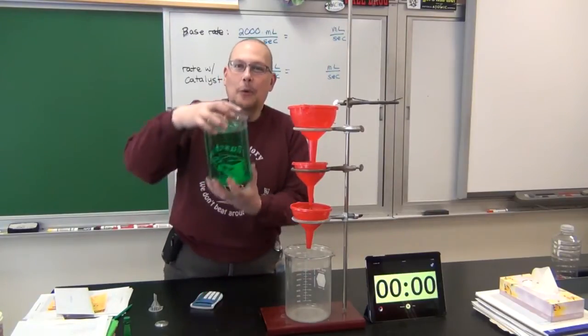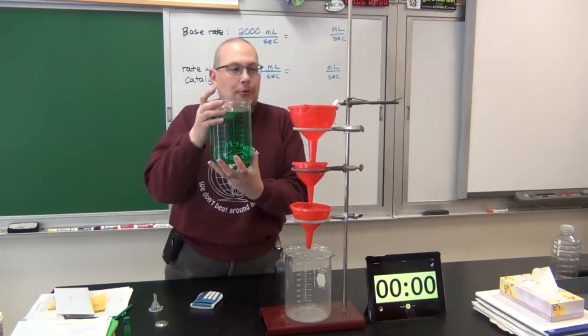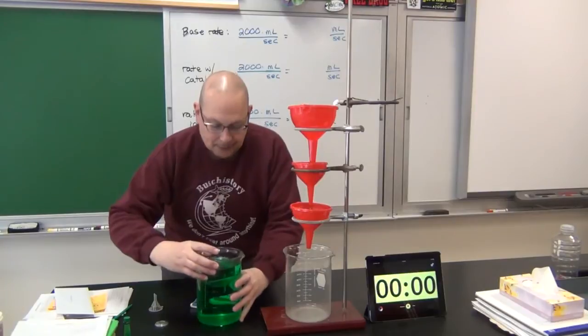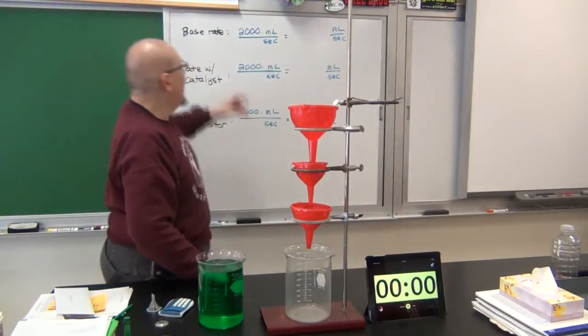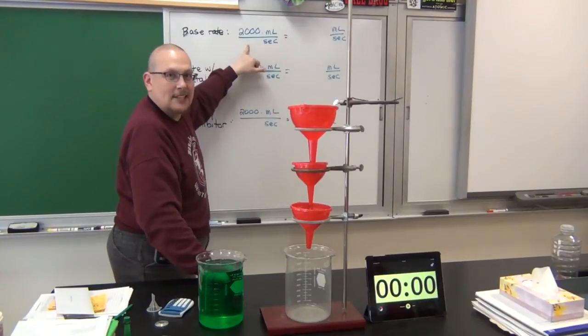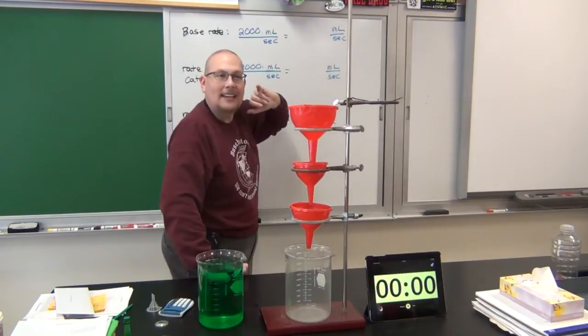What is the reaction? We're going to pour this 2,000 milliliters of green water through these steps and figure out how long it takes to do that. We're going to calculate its rate. Since I'm going to pour in 2,000 milliliters, we'll figure out how many seconds it takes to go through and then we'll calculate the rate in how many milliliters go through per second.